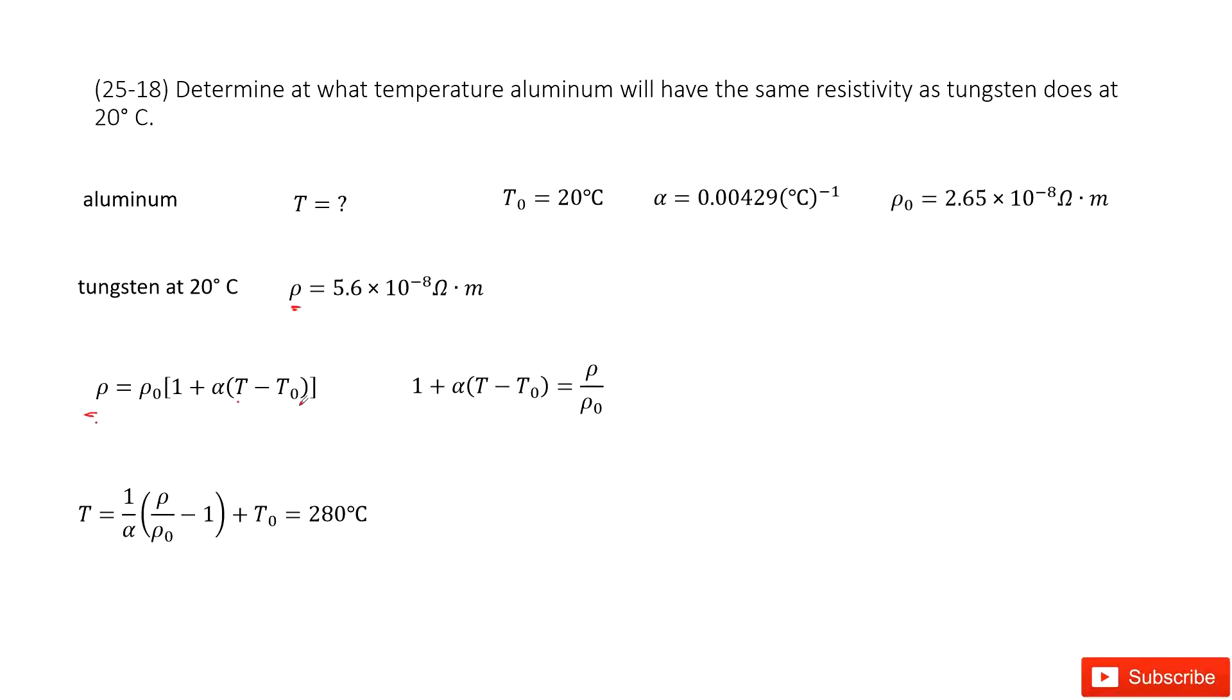So check your textbook. You can find that the temperature is 20 degrees Celsius. The rho naught is listed in the textbook and alpha is a constant. So these three quantities can be found in your textbook.